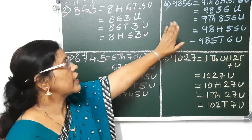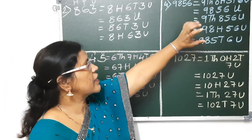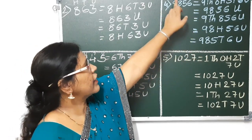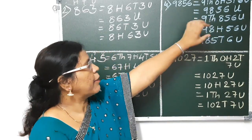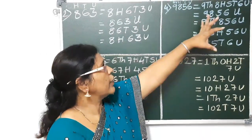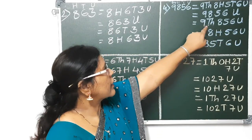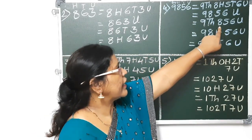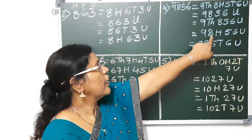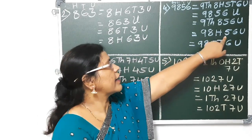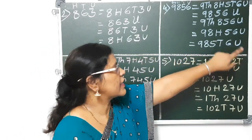The fourth one is also a 4-digit number: 9856. Here we have 9800s, 5 tens, and 6 units. First break up: 9856 units. Then 9000 and 856 units. Then 98 hundreds and 56 units. Then 985 tens and 6 units.